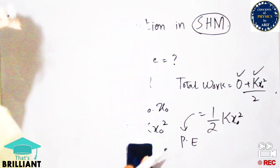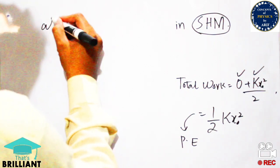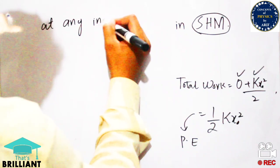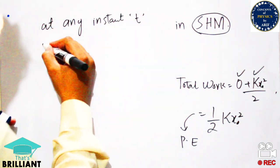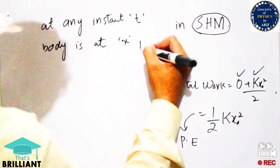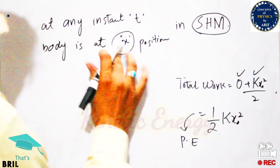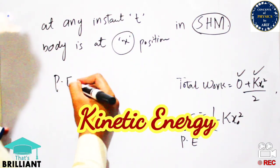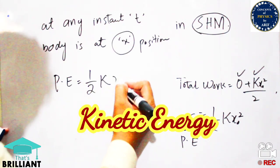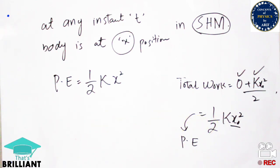We will also discuss kinetic energy and potential energy, and consider how the total energy involves their interconversion. At any instant t, the body is at position X. The potential energy at that instant is ½kX² — we use X instead of X₀ because the body is at position X, so the potential energy is ½kX².